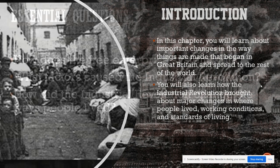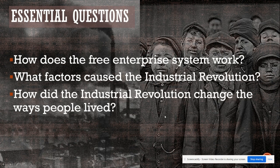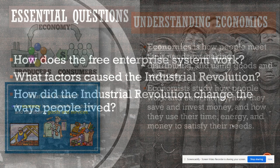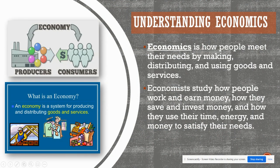The essential questions are: part one — how does the free enterprise system work; part two — what factors caused the Industrial Revolution; and part three — how did the Industrial Revolution change the way people lived. Understanding economics is actually kind of simple when you break it down — economics is how people meet their needs, essentially how you survive.